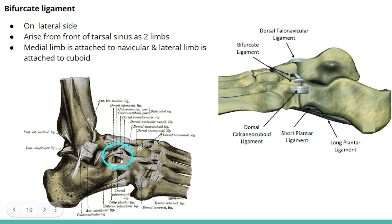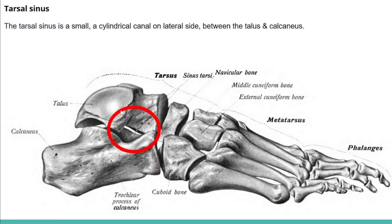The bifurcate ligament is located on the lateral aspect and, as its name explains, has two limbs. It arises from the front of the tarsal sinus, with a medial limb attaching to the navicular bone and a lateral limb attaching to the cuboid bone. The tarsal sinus is a small cylindrical canal located laterally between the talus and the calcaneus.